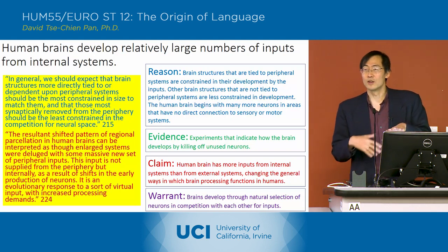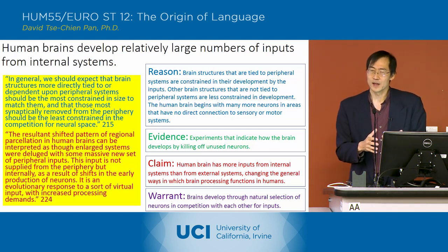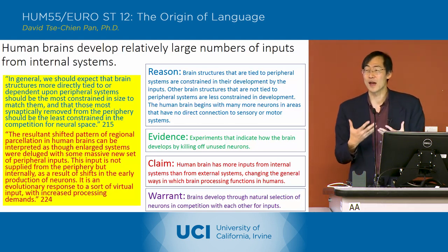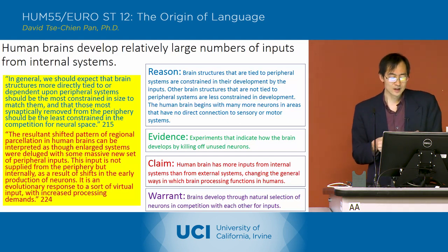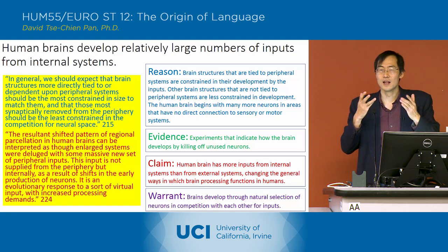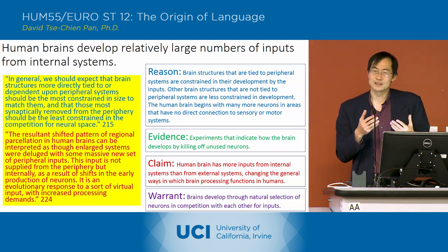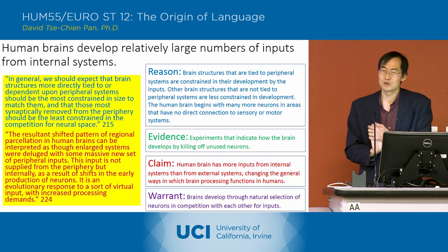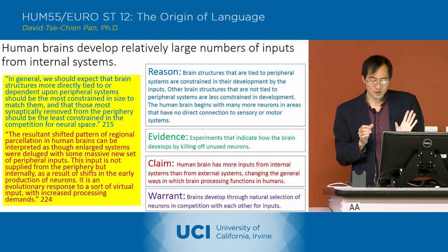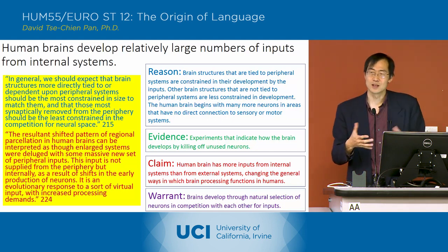Once we recognize this malleability of brain development, Deacon still wants to make the point that there is something very specific about human brains. Going back to the size of the prefrontal cortex, the human brain has relatively many neurons in the front section of the brain that don't have any direct connections to the outside world — no direct connections to sensory information and no direct connections to motor information. So the brain as a whole has more inputs from internal systems than from external systems.